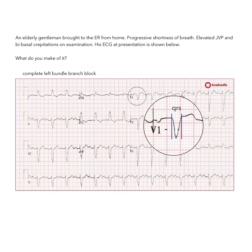In the presence of complete bundle branch block, we can still estimate the position of the cardiac axis in the initial deflections of the QRS complexes in the frontal leads. On this ECG, the cardiac axis is deviated to the left. In cases of complete left bundle branch block, the presence of left axis deviation is said to indicate more severe underlying cardiac pathology.